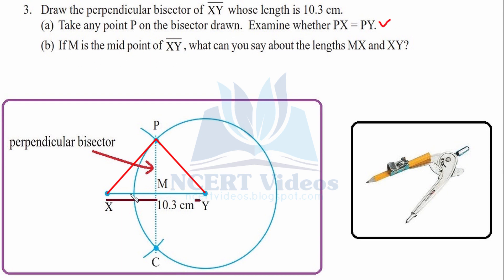Part B: If M is the midpoint of XY, it is a midpoint because it lies on the perpendicular bisector. Regarding the lengths MX and XY: XY is the complete segment while MX is half. Since XM and MY are equal, XY is twice MX. Therefore, XY equals twice MX, because the distance XY is two times XM or two times MY.